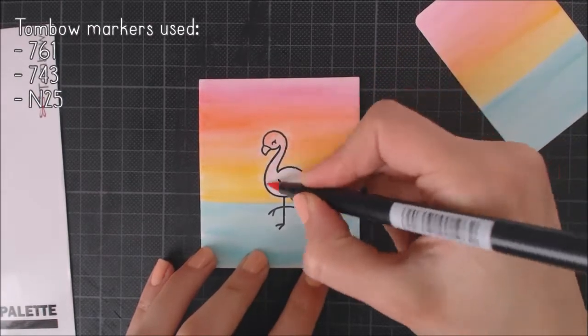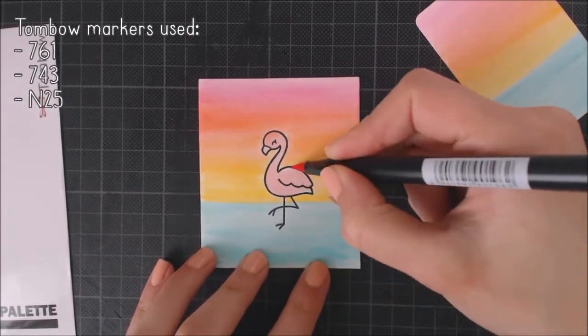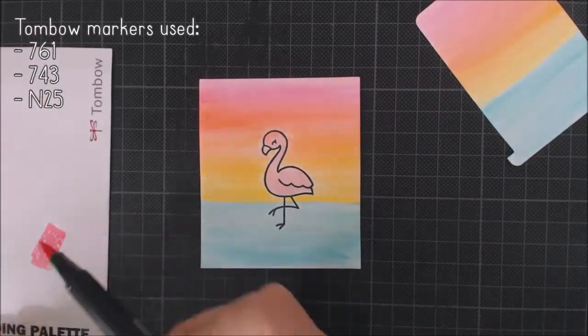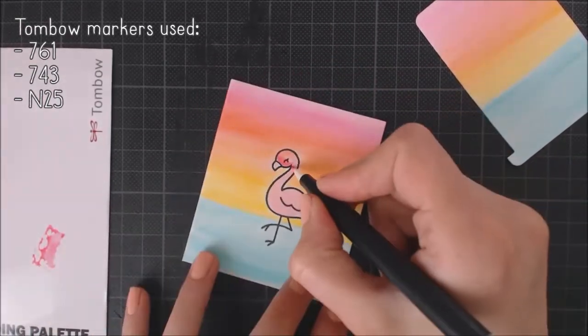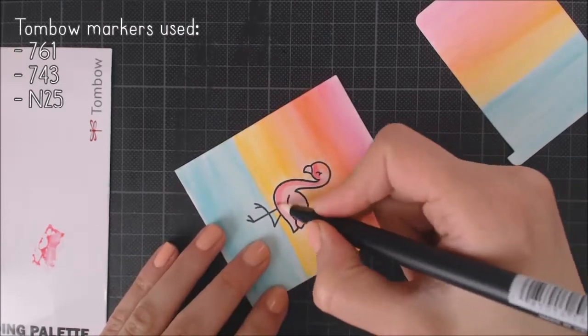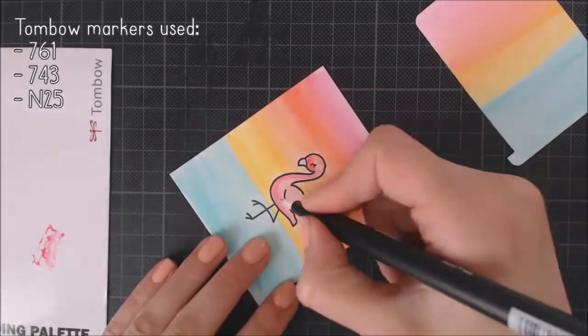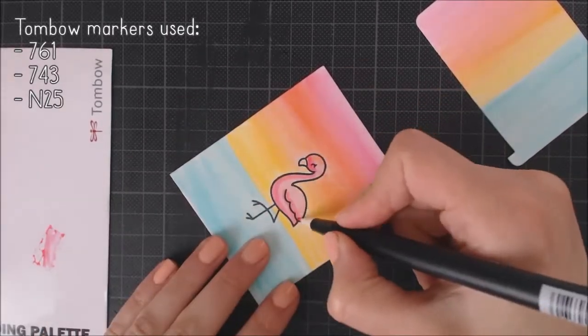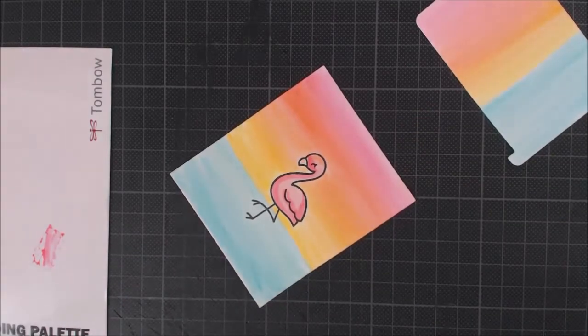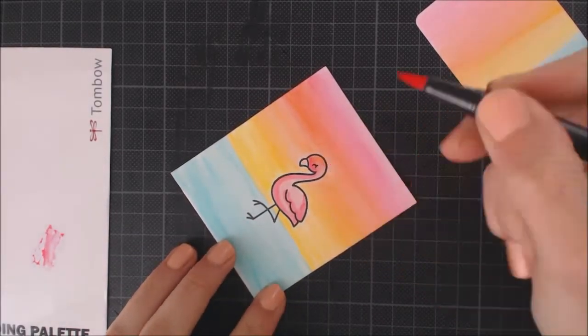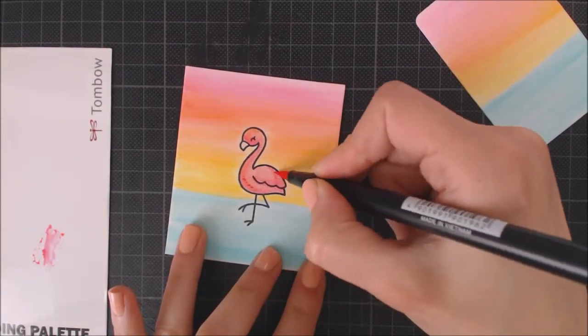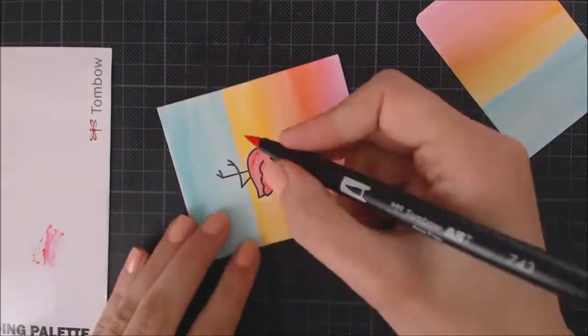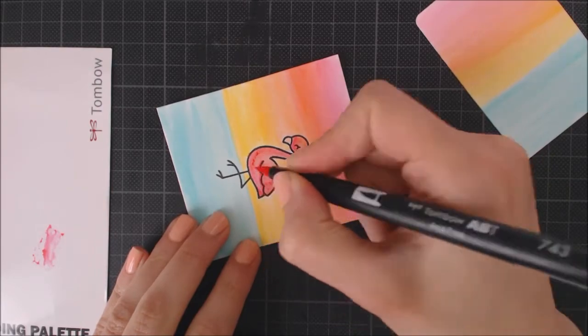To color the flamingo, I'm going to use the markers without water. I'm going to start with my light color first, and use the blender to pick up the dark color and add some shadows. Then I take my dark color to add some darker shadows, and finally, I go back with my light color to blend everything together a bit. I don't recommend adding a lot of color because the paper will start to tear up.